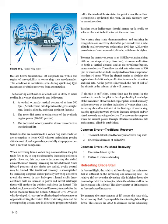Common errors — traditional recovery: 1. Too much lateral speed for entry into vortex ring state. 2. Excessive decrease of collective. Common errors — Vuichard recovery: 1. Excessive lateral cyclic. 2. Failure to maintain heading. Retreating blade stall in forward flight: The relative airflow through the main rotor disc is different on the advancing and retreating side. The relative airflow over the advancing side is higher due to the forward speed of the helicopter, while the relative airflow on the retreating side is lower.